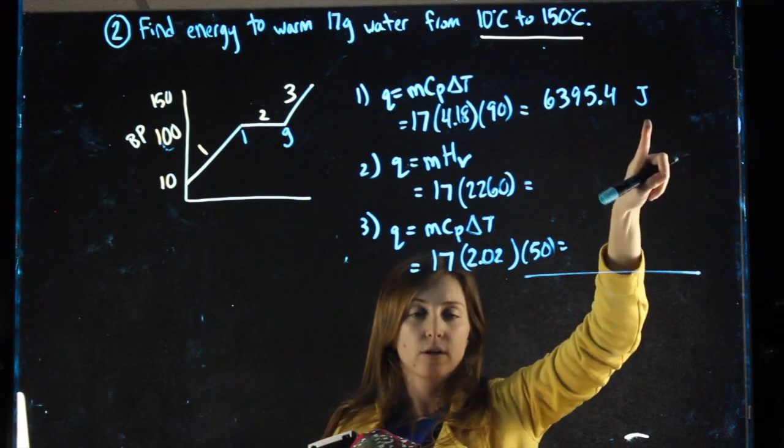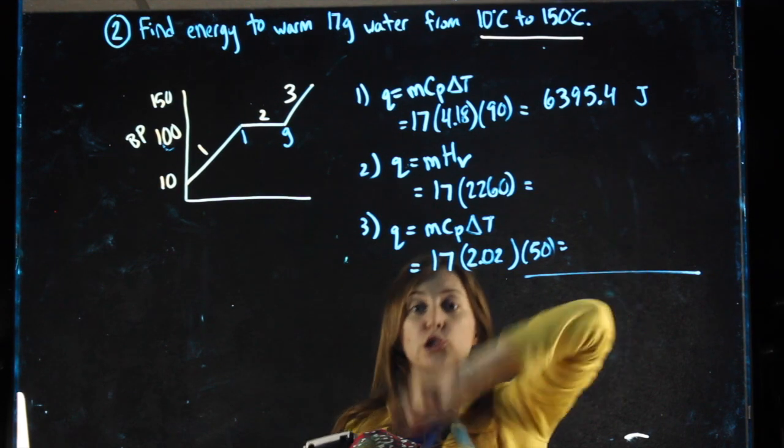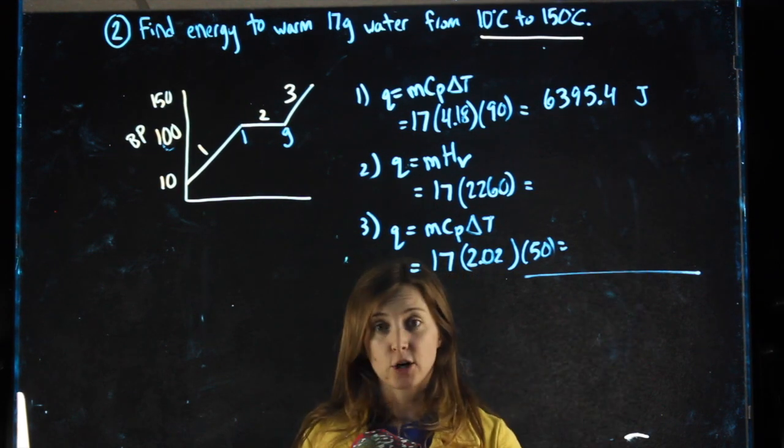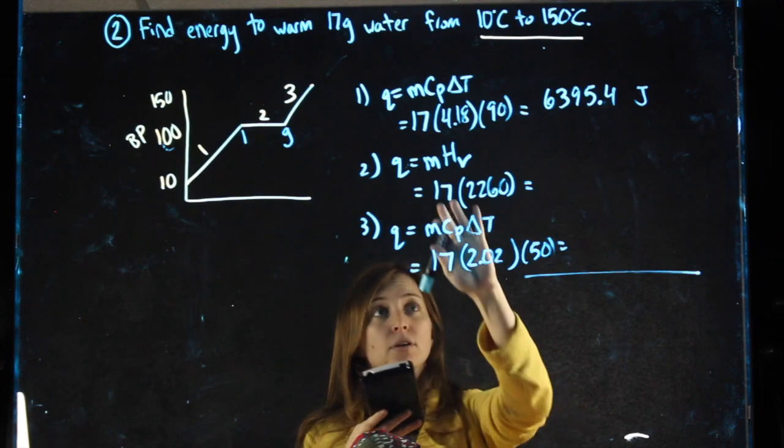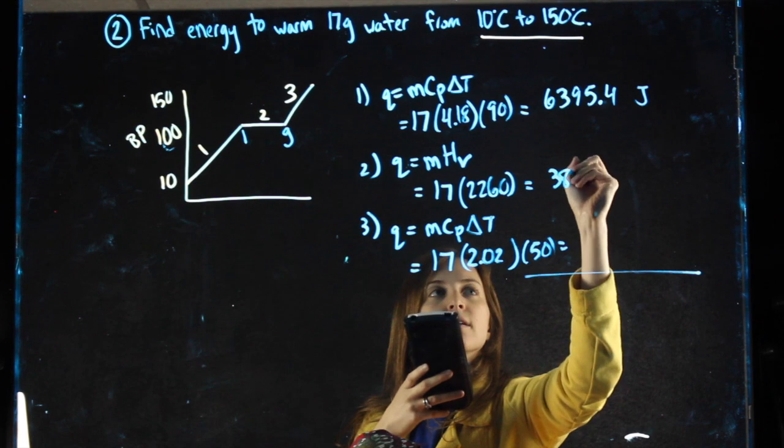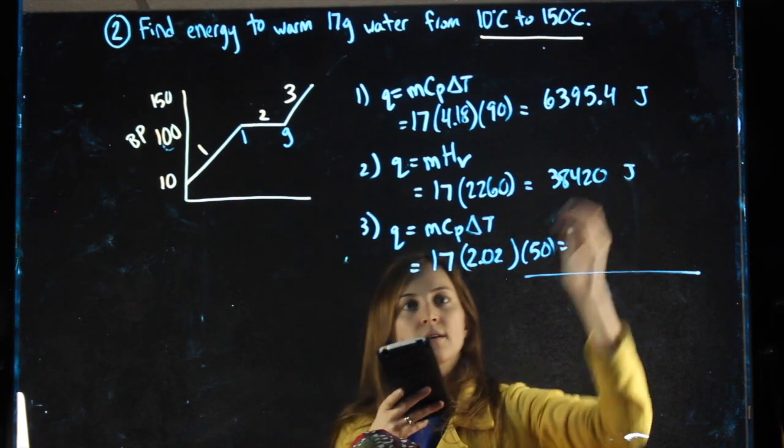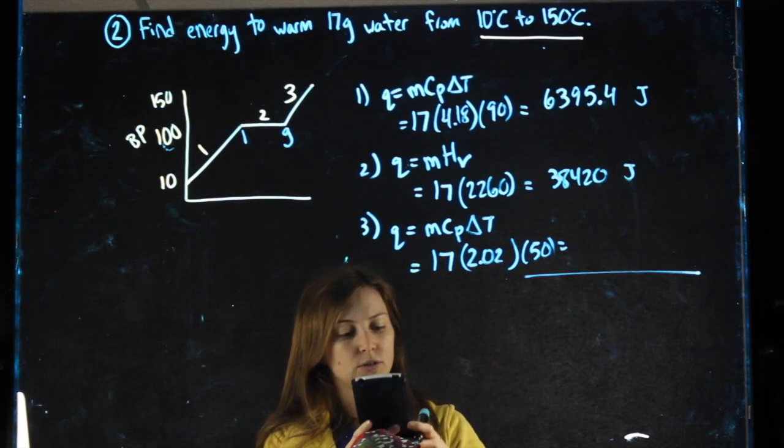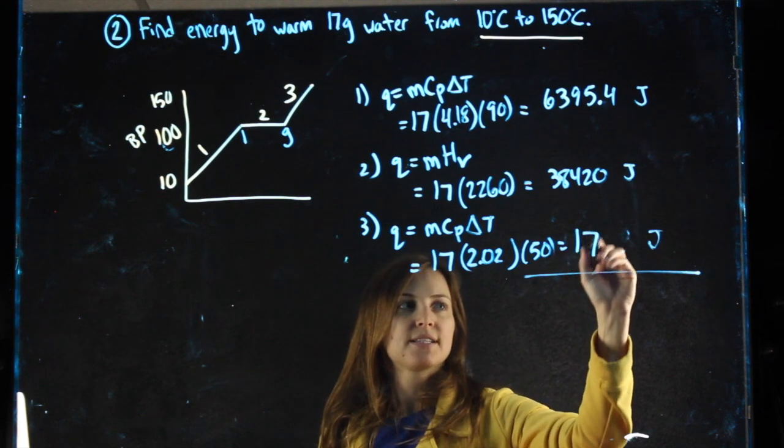You can check the units that are in the chart if you forget. 17 times 2260. 17 times 2.02 times 50 gets me 1717.